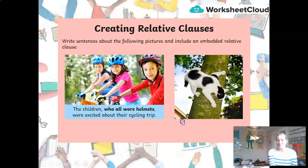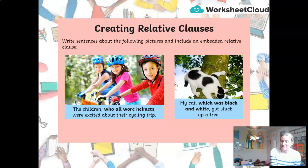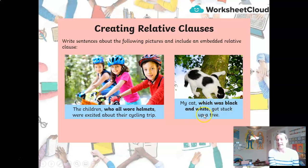And then the next one: 'My cat, which was black and white, got stuck up a tree.' Here's the embedded relative clause — 'which was black and white' — it tells me extra information, added detail about the cat, and it is in the middle of the sentence.